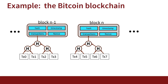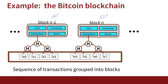Let's start with the first concrete example — the Bitcoin blockchain. In Bitcoin, we have a blockchain, which is essentially a sequence of blocks. Here you see block number n minus one and block number n. Every block has a certain set of transactions inside of it: block n minus one has four transactions, and block number n also has four transactions.